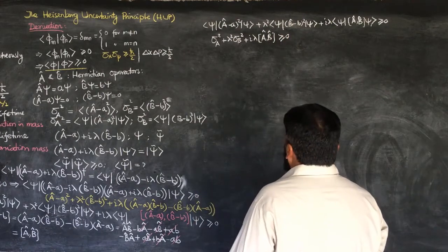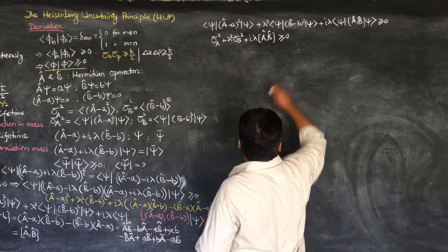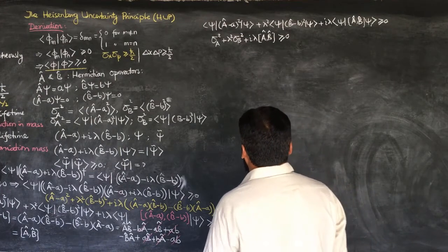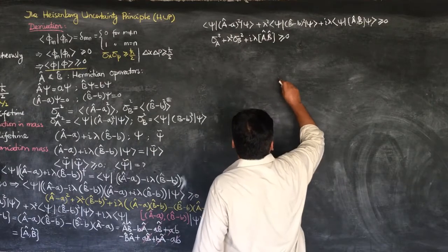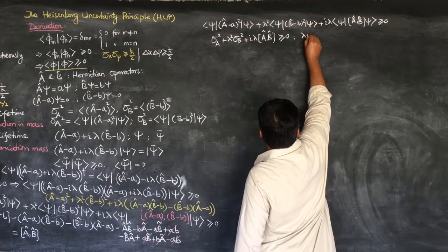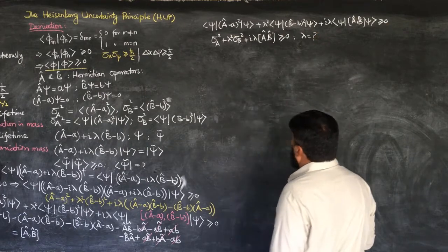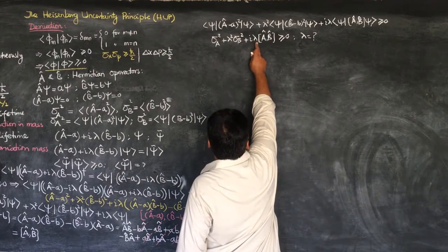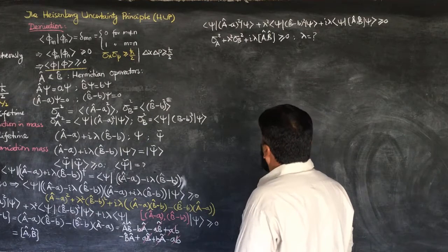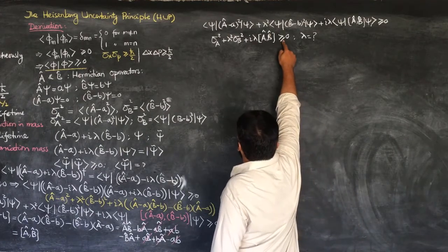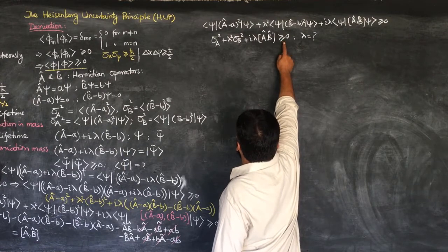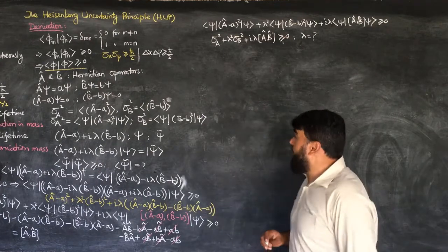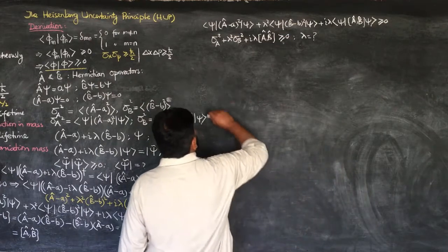I wrote this expression without the |ψ⟩ notation here. Now I know I will have to solve for the value of λ, since it is an unknown constant. We will determine the value of this one. When it equals zero, this will be the minimum value; greater than zero corresponds to a maximum.